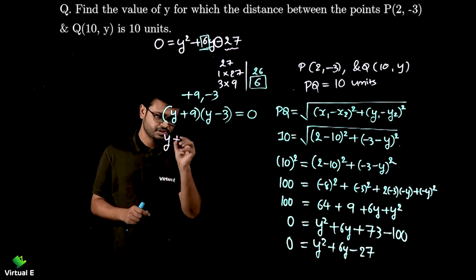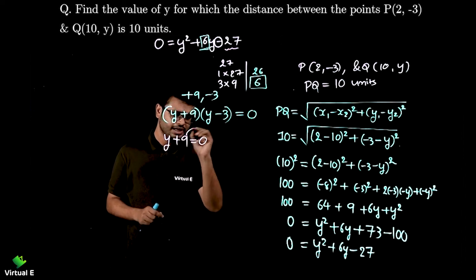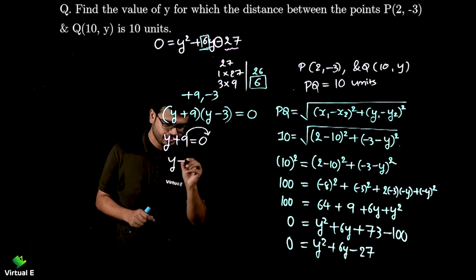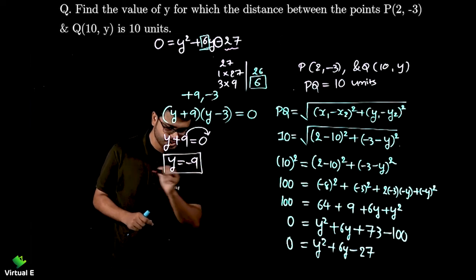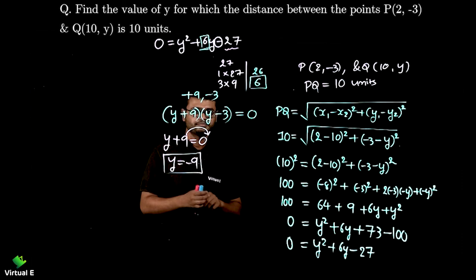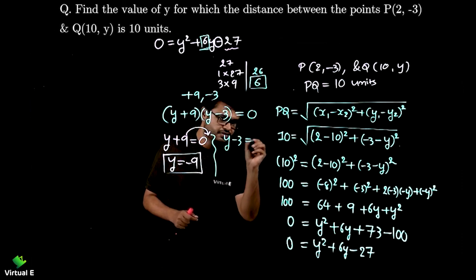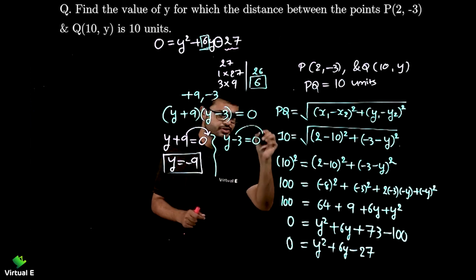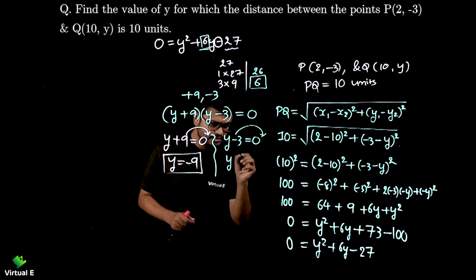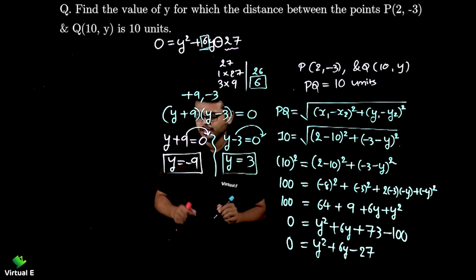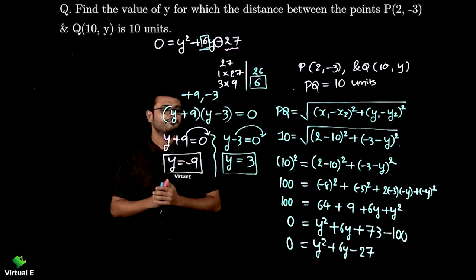y + 9 = 0. Let's shift. y = -9. That's my first solution of the equation. Let's get the another one which is y - 3 = 0. Let's shift over here. So y will, 3 will become positive. So there are two solutions. y = -9 and y = 3.